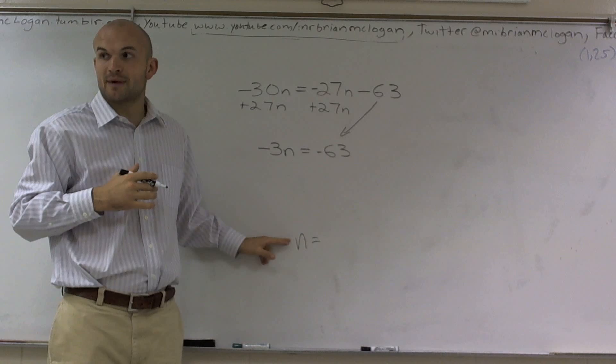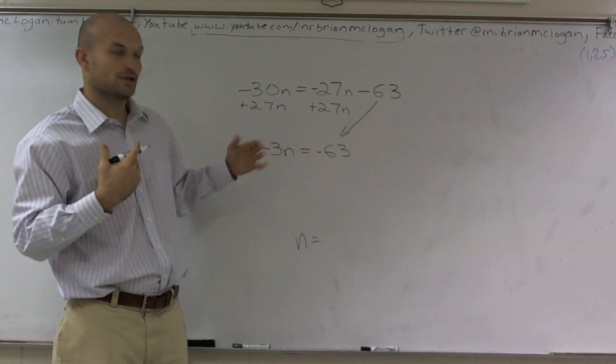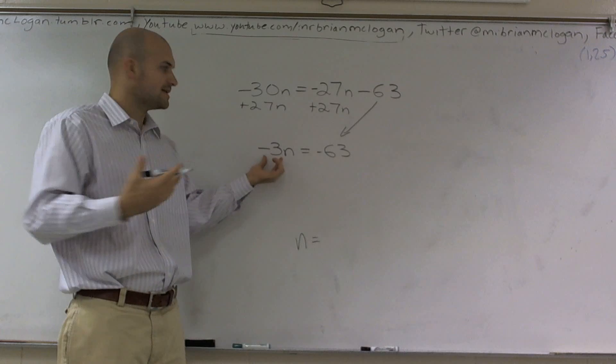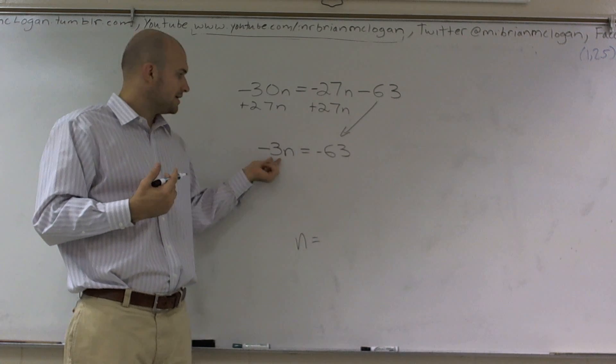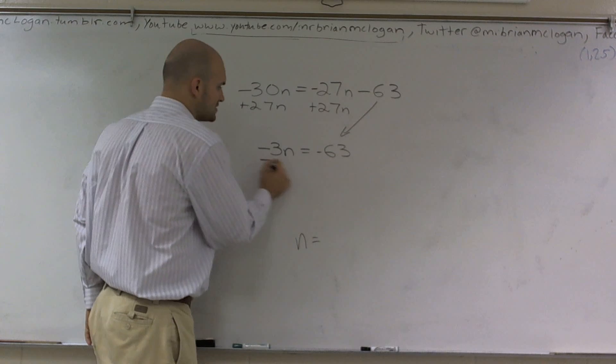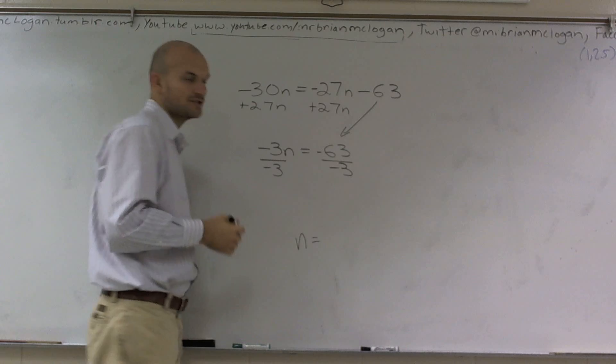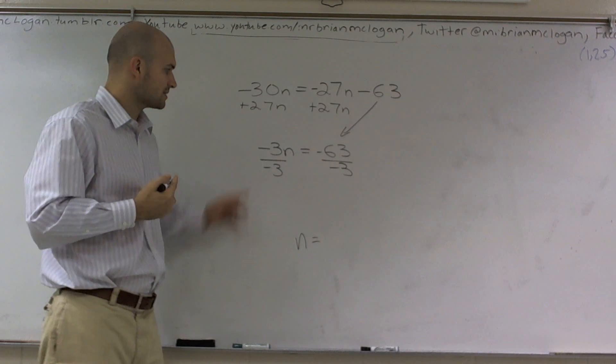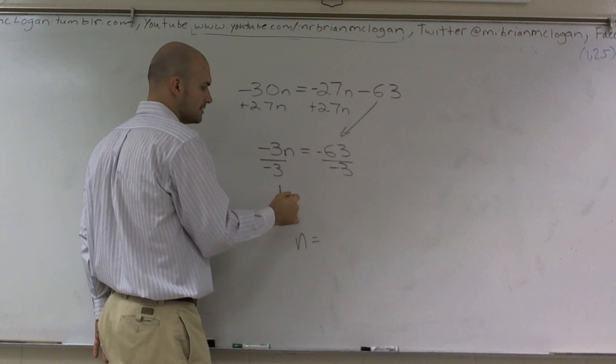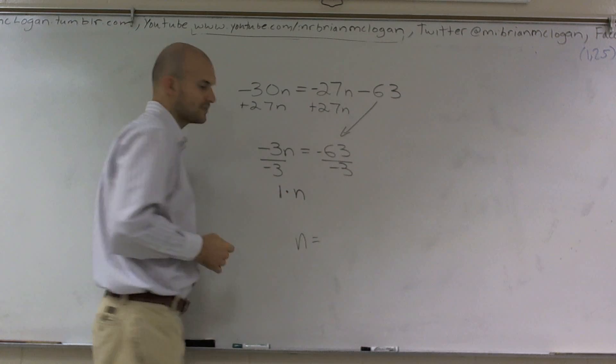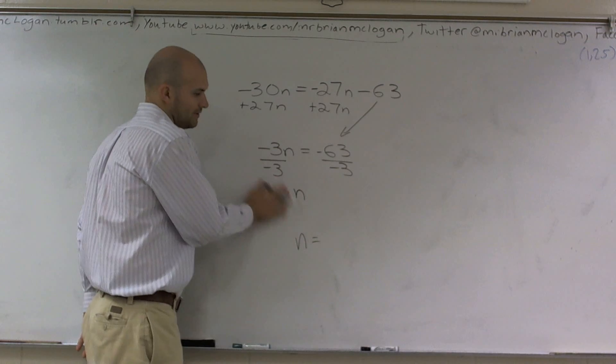Now we're almost to my n by itself. I need to look at what's happening to my n. I can see that now my n is being multiplied by negative 3. To undo it being multiplied by negative 3, I'm going to divide by negative 3. Division property of equality says to divide on both sides. Negative 3 divided by negative 3 is going to give you positive 1 times n. Now 1 times n is always going to equal n.